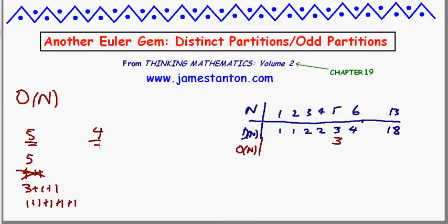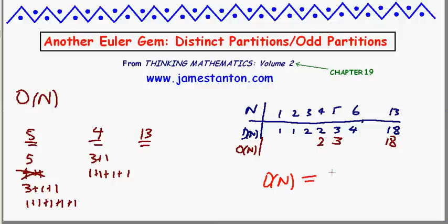For another example, 4 can only be 3 plus 1, or 1 plus 1 plus 1 plus 1 — that's it, two ways. As a real challenge, you might want to pause and work out all the ways to break 13 down as a sum of odds. You'll find there are 18 ways. So the big question is: is the number of ways to break a number into distinct parts always equal to the number of ways to break it into odd parts?